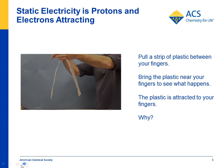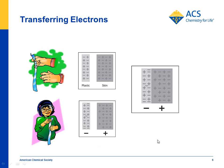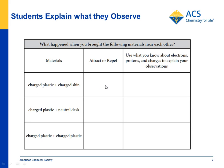This activity gets kids thinking about what atoms are made out of — a macroscopic look at electrons and protons. On the student activity sheet, we show kids that originally the plastic and the skin of their hand had about the same number of protons and electrons, but after rubbing the plastic strip on your fingers, electrons move from your skin to the plastic, so the plastic is more negative and the skin is more positive — and they attract. Students record whether charged plastic attracted or repelled with their skin, a neutral desk, or two pieces of charged plastic, then use what they know about electrons and protons to explain their observations.